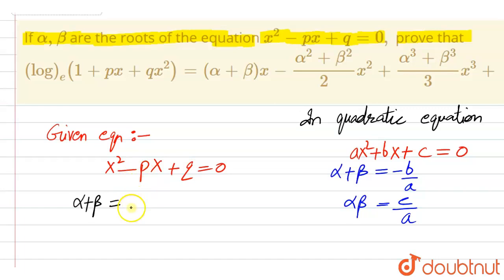So this is minus minus p, divided by 1, that is coefficient of x squared. And product of roots, that is alpha into beta, is equal to q here. Okay, using this formula.